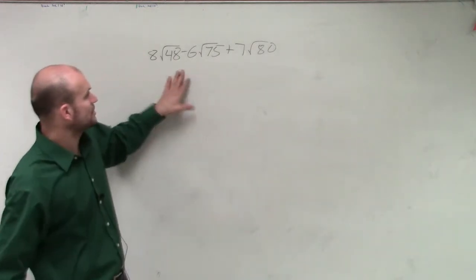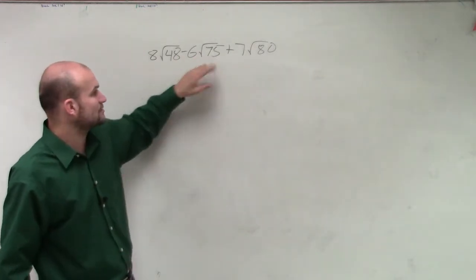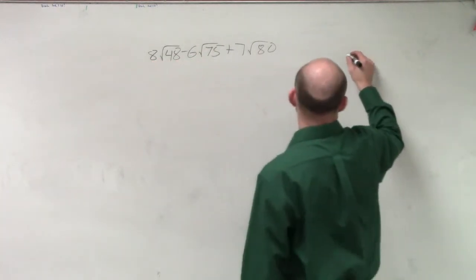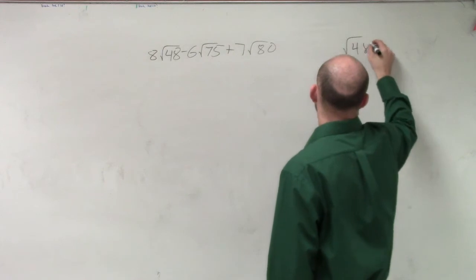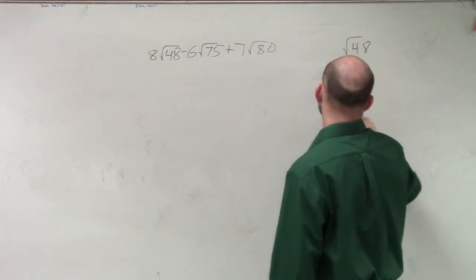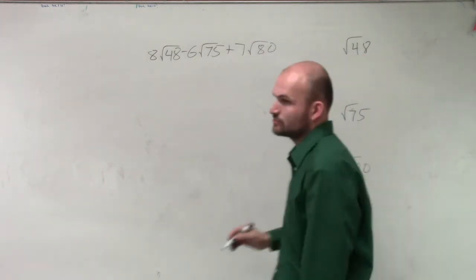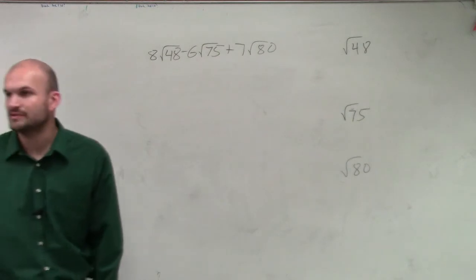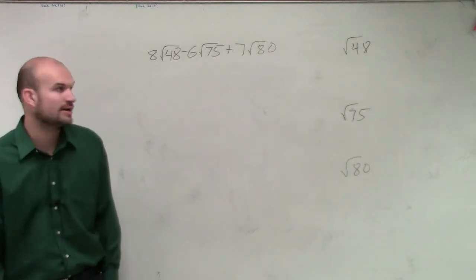So before, we obviously know these are not like terms. The square root of 48, square root of 75, and square root of 80. So what I'm going to do is I need to see, can I simplify all of these square roots? And we simplify our square roots by saying, what is the largest number that divides into each one of those? Square numbers.